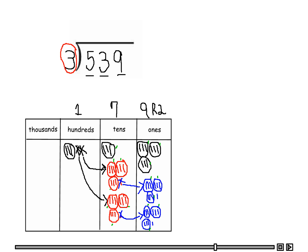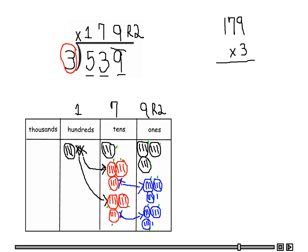I place this on my division bar: nine over the ones place, seven above the three in the tens place, and one above the five in the hundreds place, with a remainder of two. Let's check this by multiplying the divisor by the quotient: 179 times 3. This should equal my dividend. Three times nine is 27 — carry the two to the tens place.